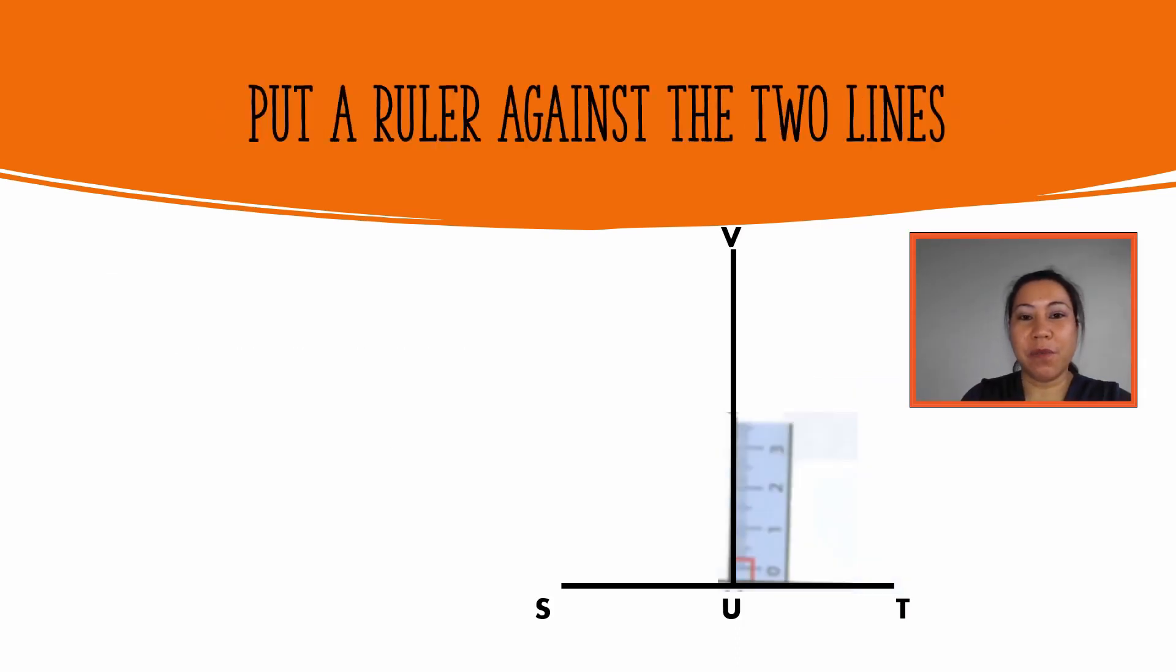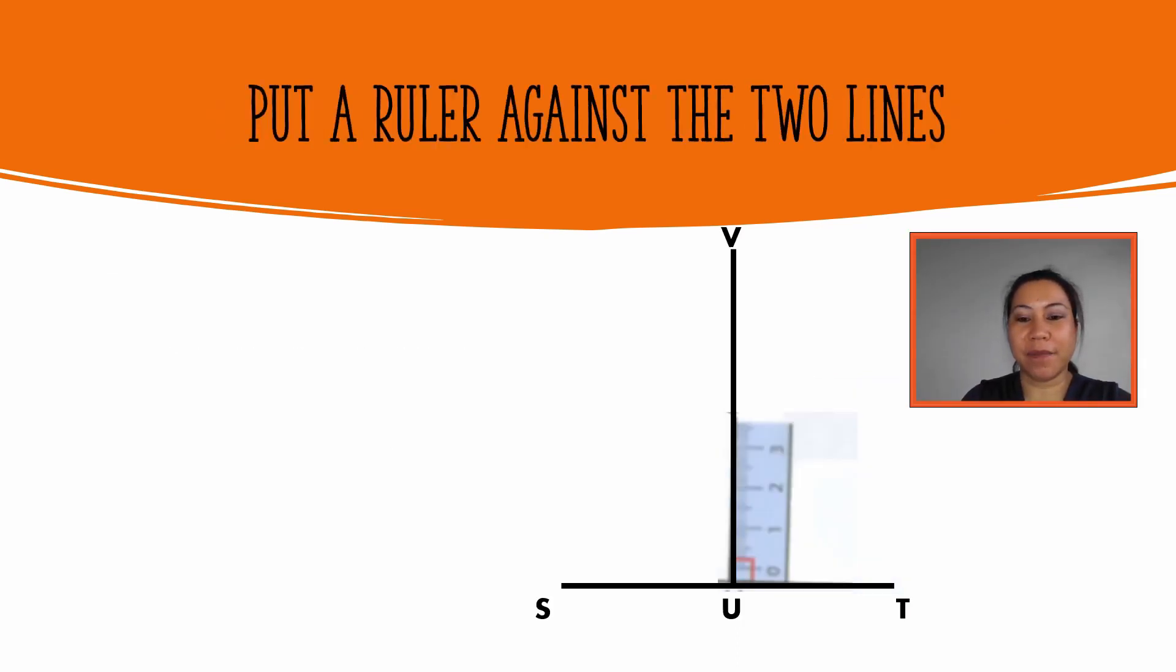We can also put a ruler against two lines. The lines meet at the right angle.